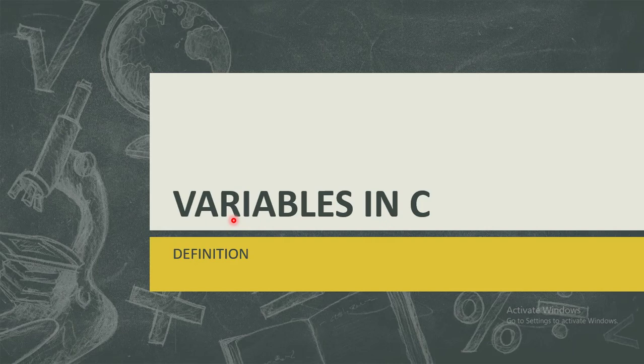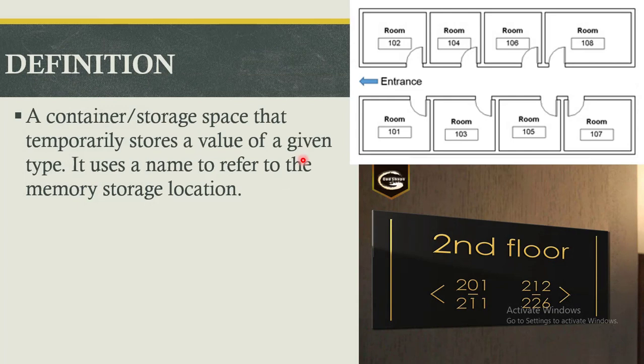Hello and welcome. Today I would want us to learn about variables, specifically the definition of a variable as well as variable declaration. When you look at a hotel, it normally contains a number of rooms, and these particular rooms are assigned room numbers. The room numbers are for easy identification to the customers who have been assigned those particular rooms. Imagine a scenario where you have a hotel that has quite a number of rooms, but those rooms do not have room numbers.